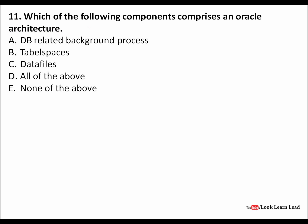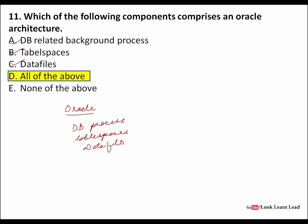Which components comprise the Oracle architecture? Oracle architecture comprises three things: database processes, tablespaces, and data files. All three — A, B, and C — are components of Oracle architecture, so the answer is D, all of the above.